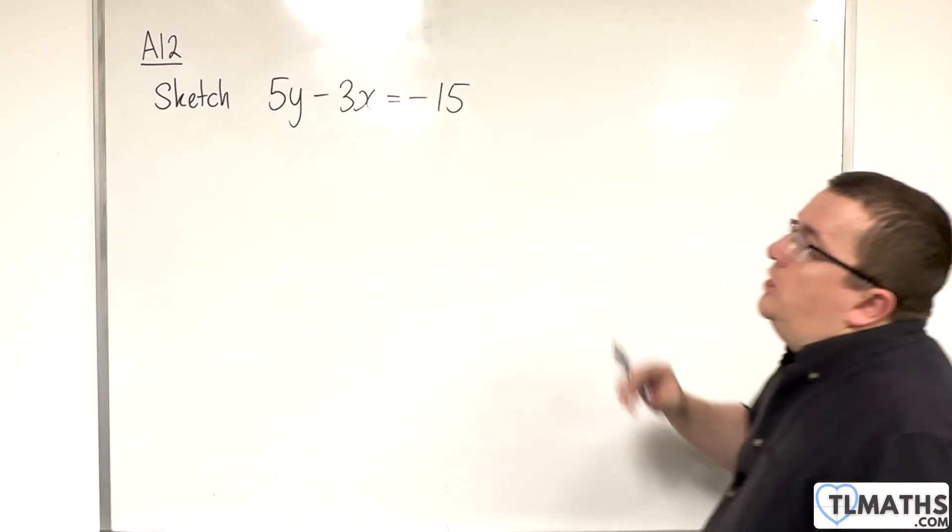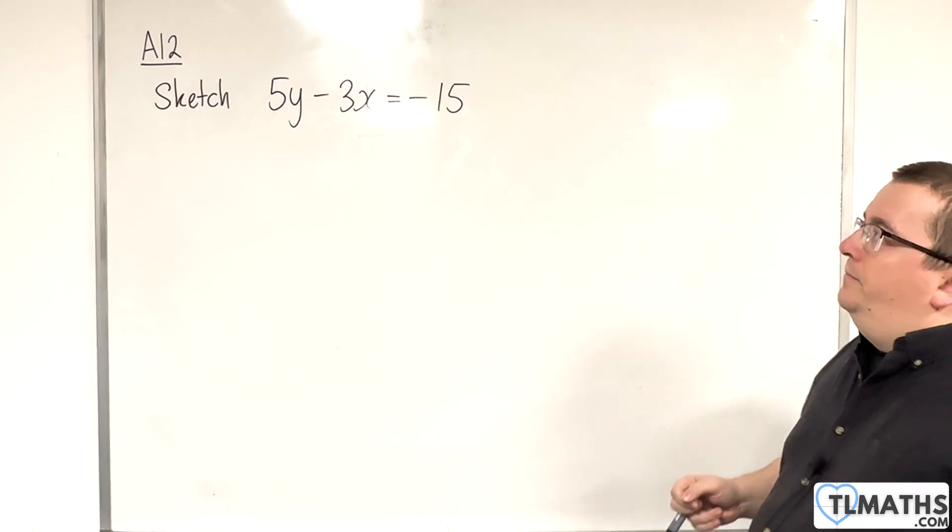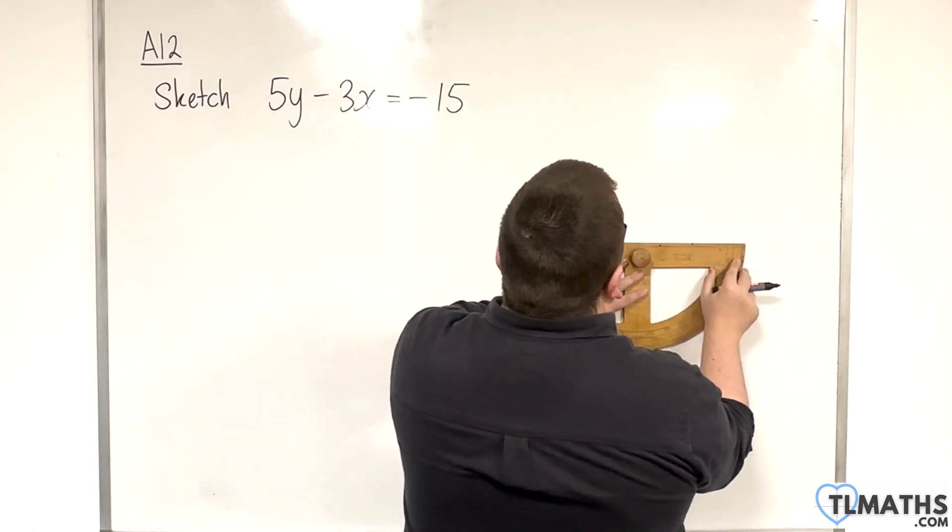In this video, we're going to be sketching 5y take away 3x is equal to negative 15. So, first of all, draw some axes.